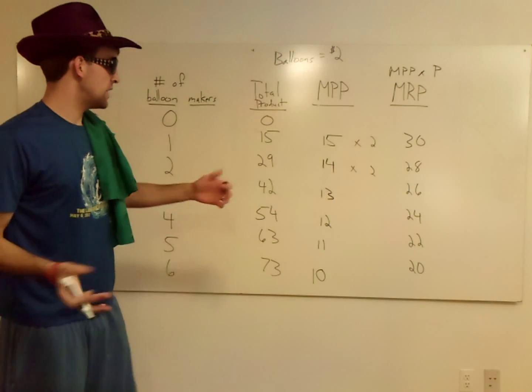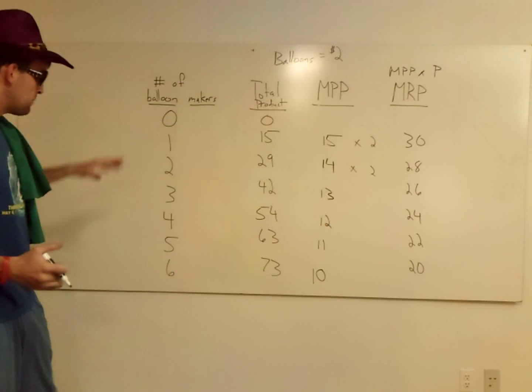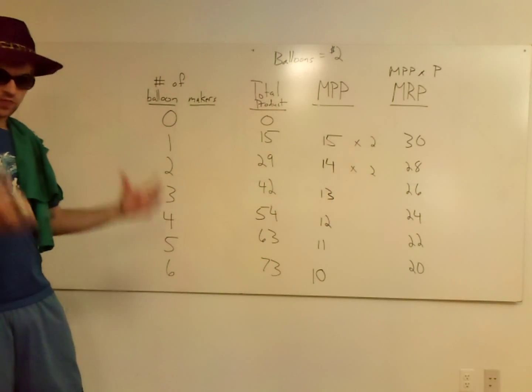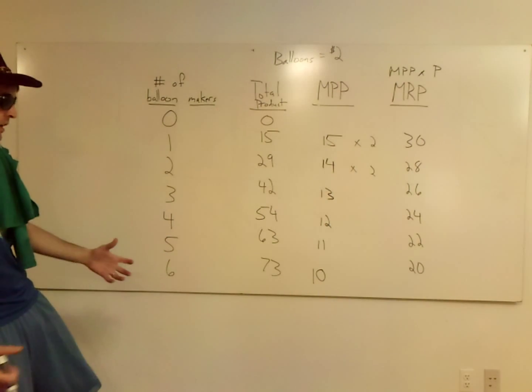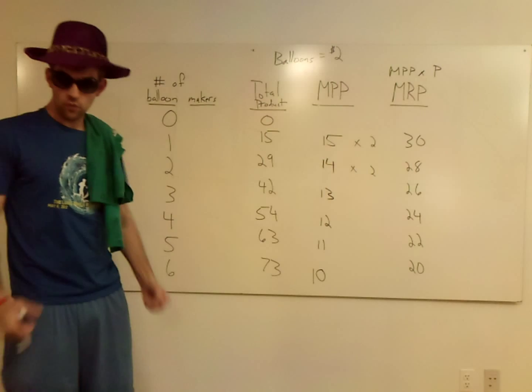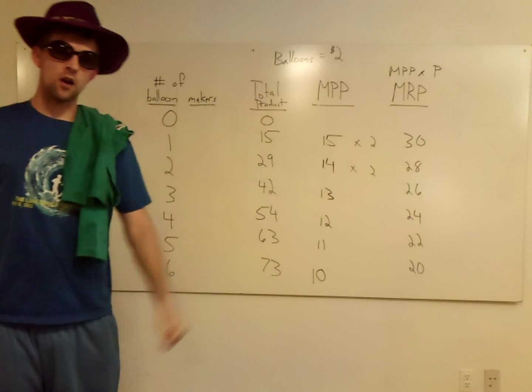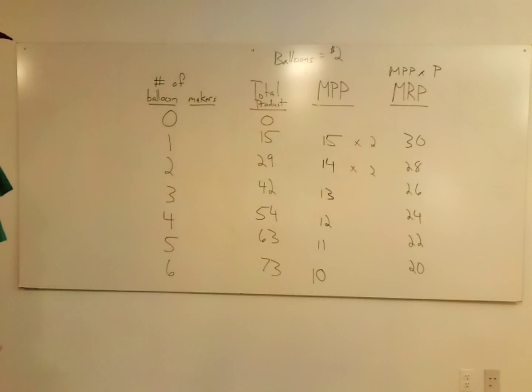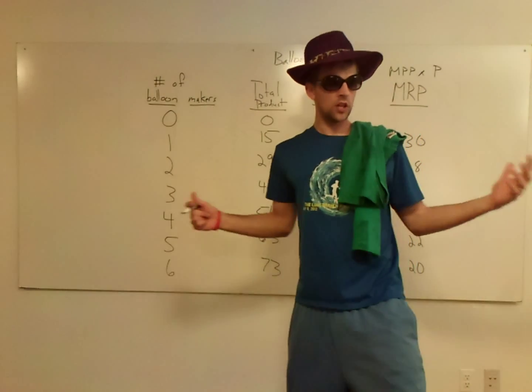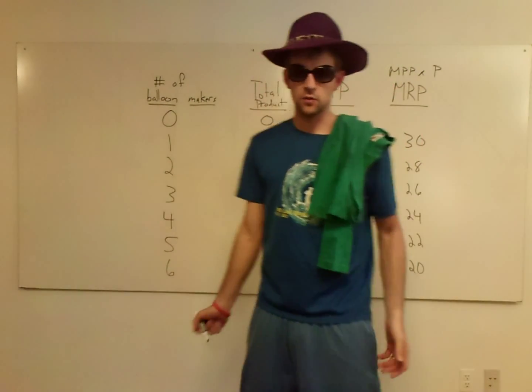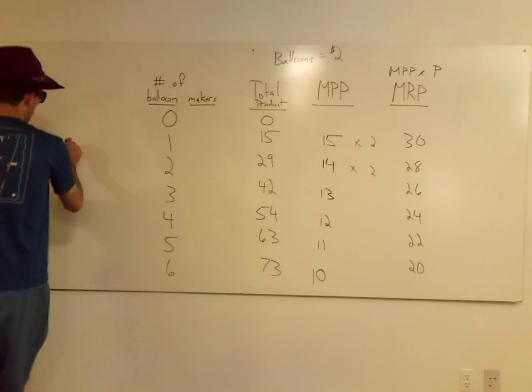Now, you can think of this like the benefit that each worker brings to the table. The first worker, he brings in 30 bucks. He's worth $30. The fourth worker, he brings in 24 bucks. He's worth $24. So the next question becomes, how many workers should I hire? Tricky. You can't tell yet because you don't know how much they cost. You have to be able to weigh the cost and the benefits of these workers. So a worker's cost is really his or her wage.